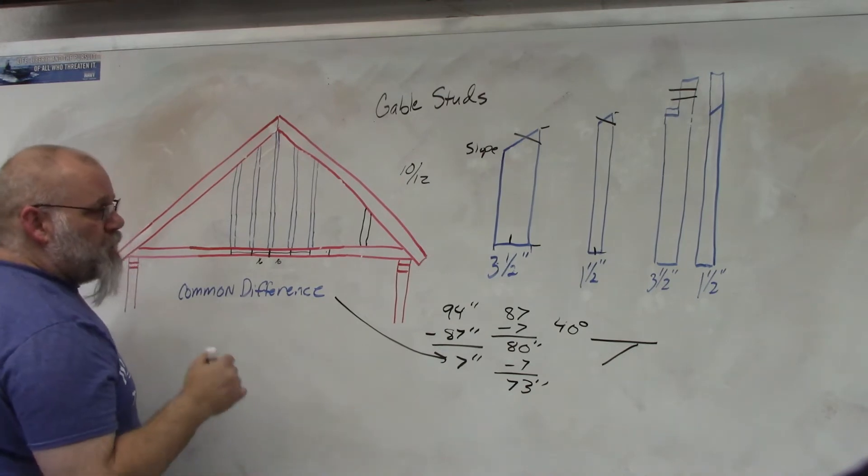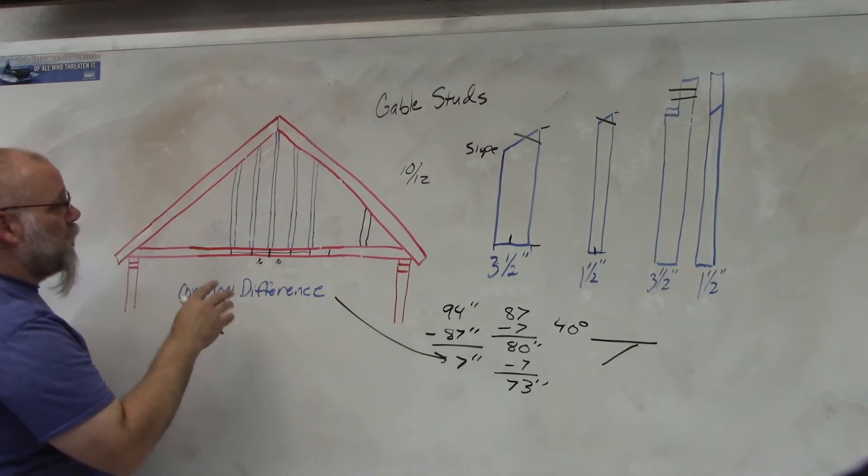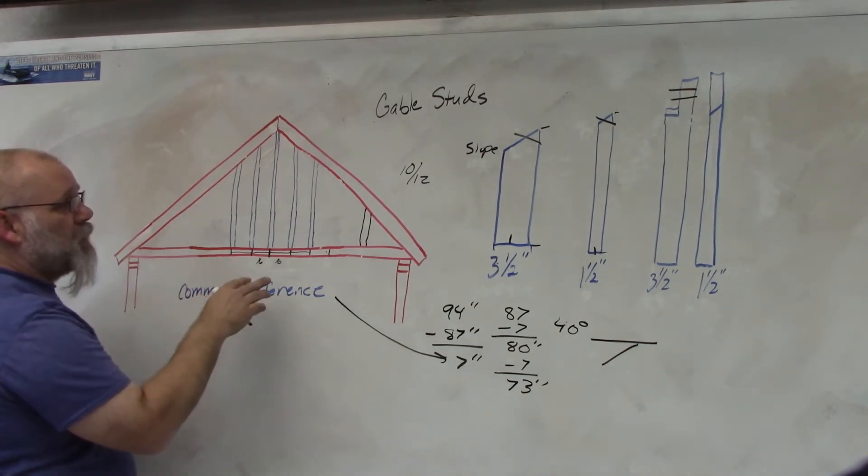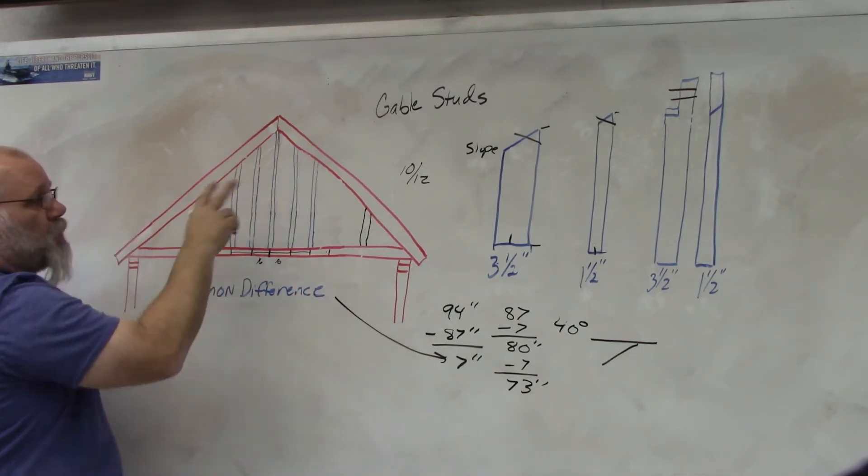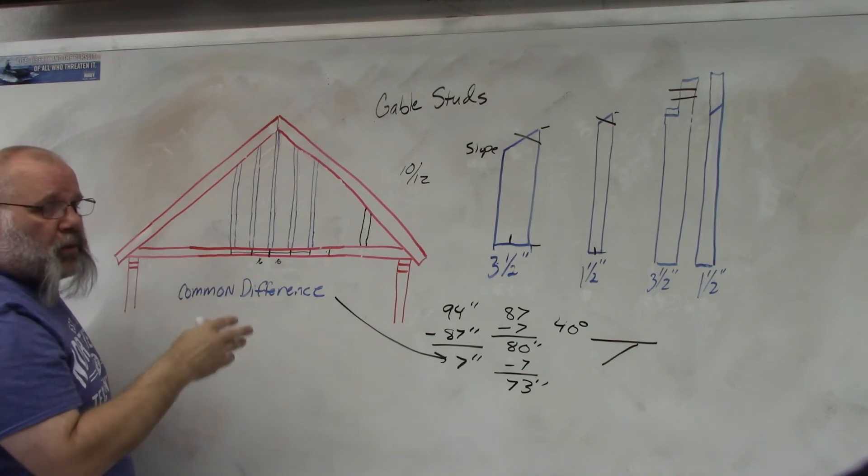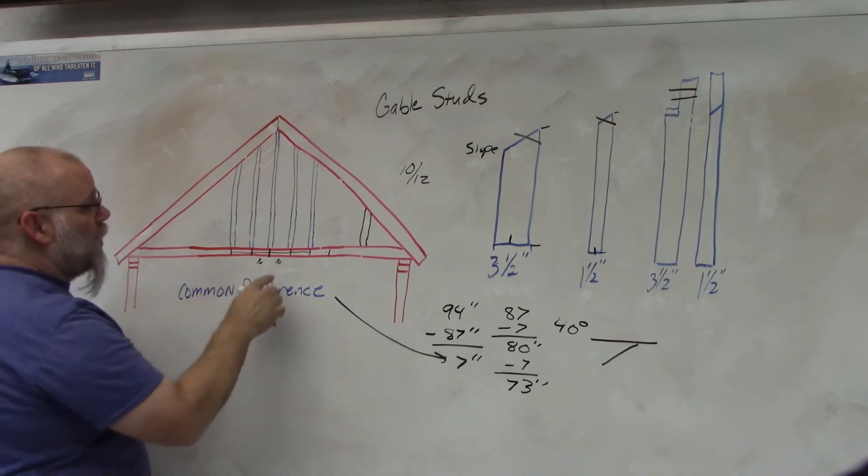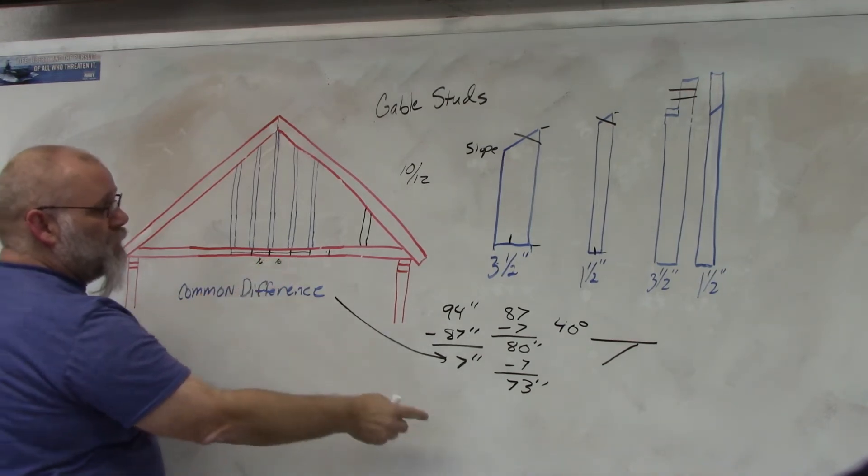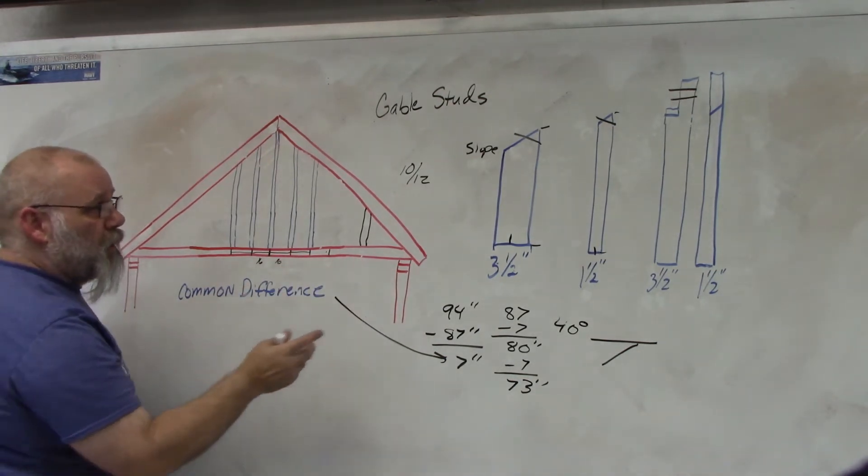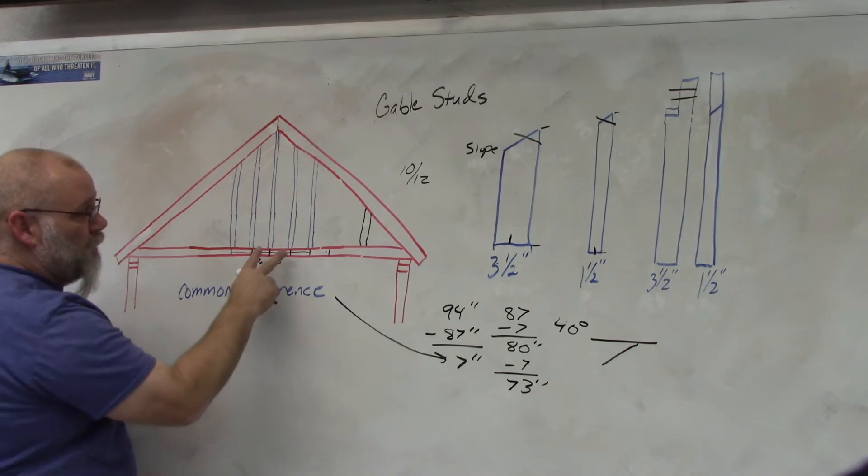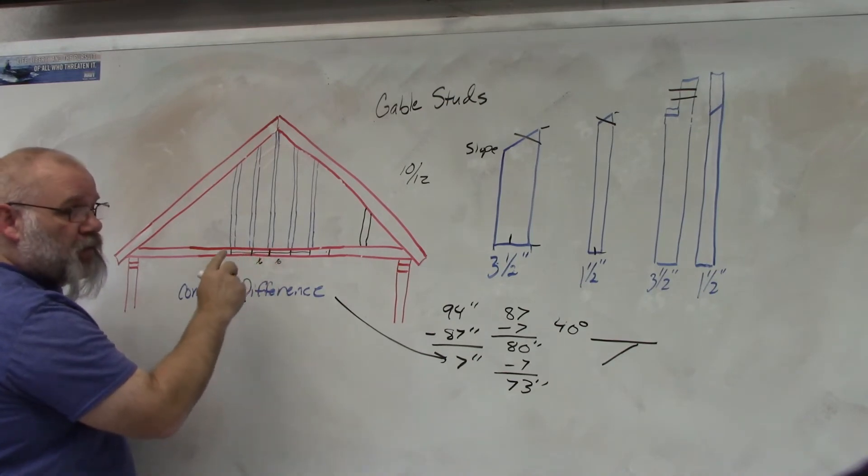So it's really simple to find their lengths. You only have to measure the first two you don't have to keep measuring over and over again. So if you're the cut man you find the difference between the first two and then keep subtracting it and it should work out if you measure the first two accurately. It's very important to measure the first two very accurately.